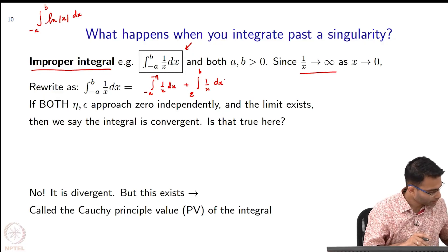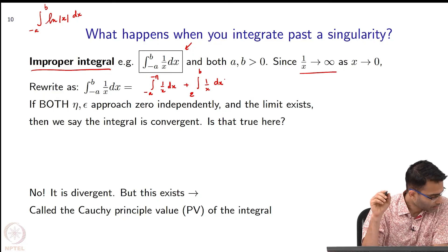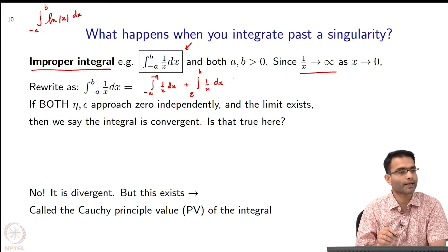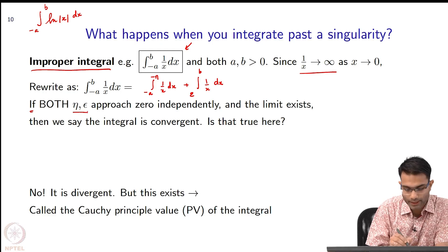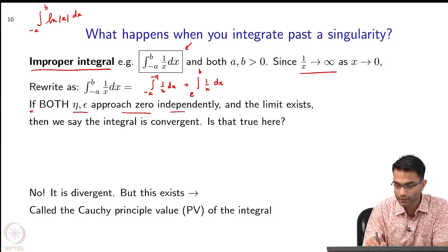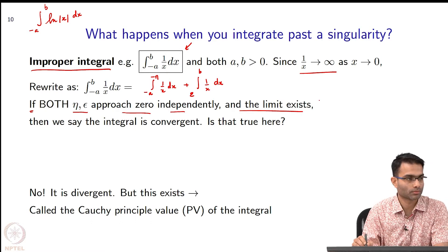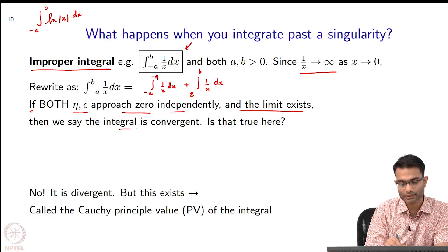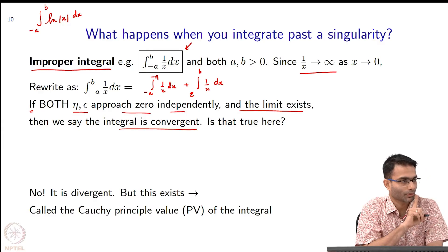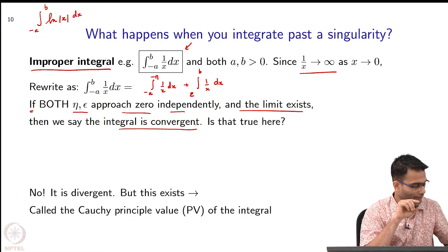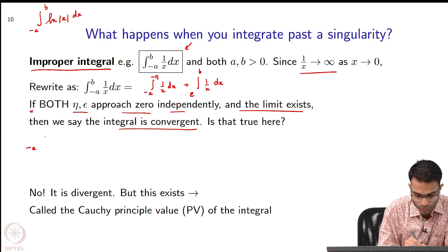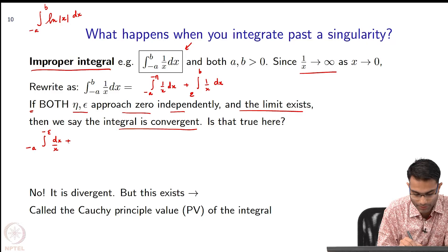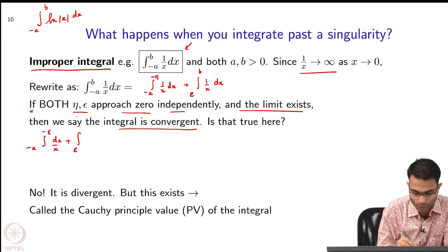In order for you to answer whether or not this integral is convergent or divergent, this is revision from calculus. What you should do is break this up as minus a to eta, 1 by x dx, plus epsilon to b, 1 by x dx. I break this up in this fashion, and if it happens that as eta and epsilon both approach 0 independently and the limit exists, then we say the integral is convergent.